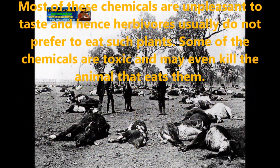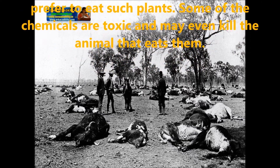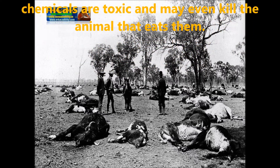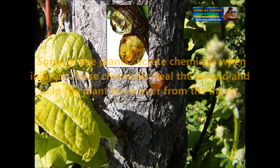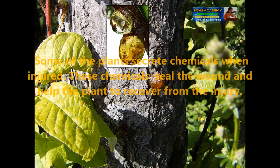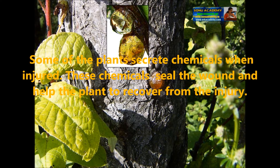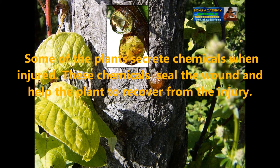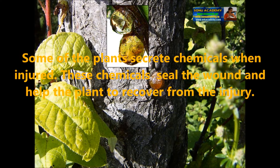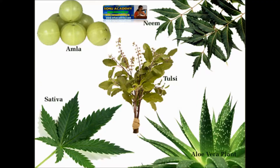Some of the chemicals are toxic and may even kill the animal that eats them. Some plants secrete chemicals when injured; these chemicals seal the wound and help the plant to recover from the injury.